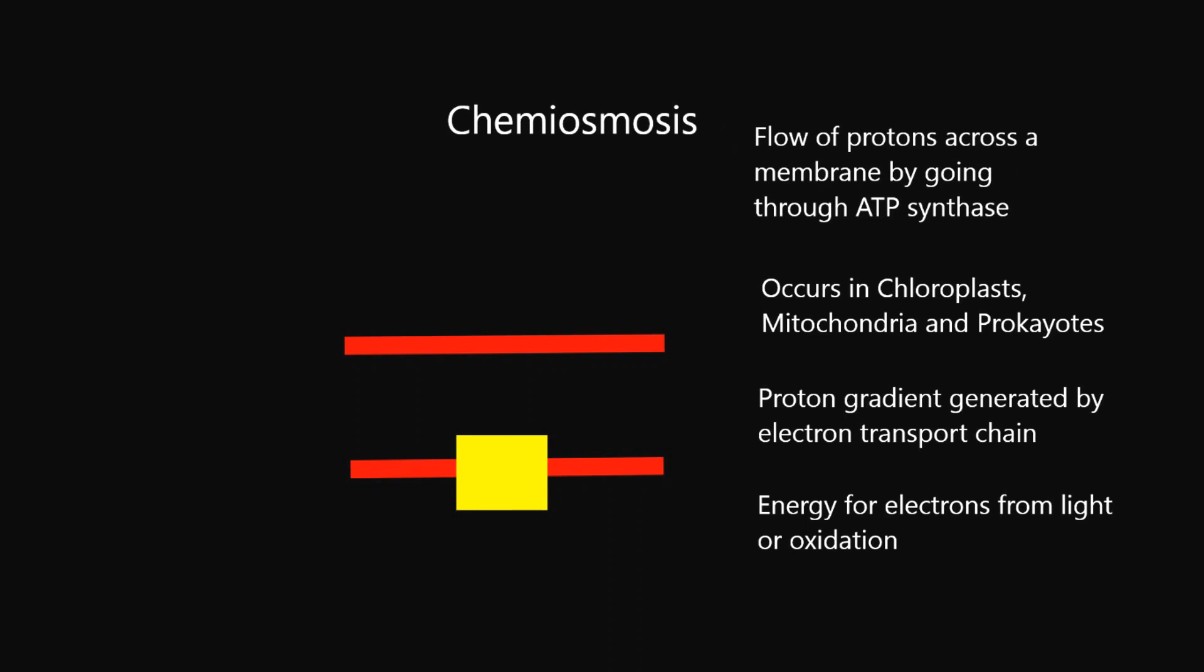Chemiosmosis occurs in prokaryotes because that's where it evolved, and in chloroplasts and mitochondria because those are prokaryotes engulfed in another membrane in the endosymbiotic theory of organelle formation.